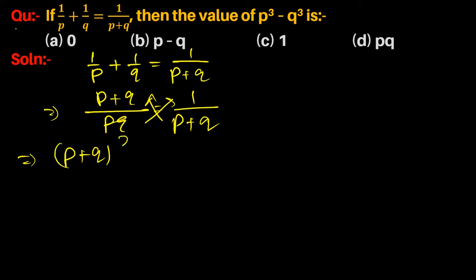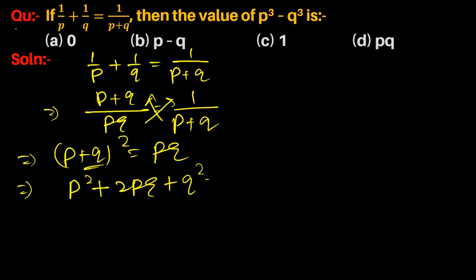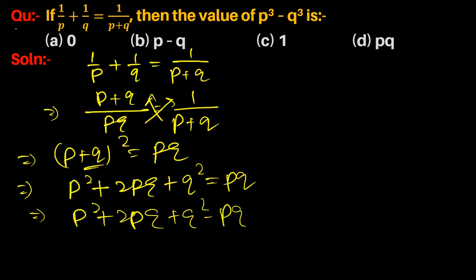After cross multiplication, (p+q)² = pq. Using the identity (a+b)² = a² + 2ab + b², we get p² + 2pq + q² = pq, which simplifies to p² + 2pq + q² - pq = 0, giving us p² + pq + q² = 0.